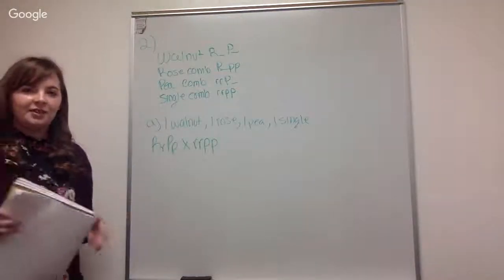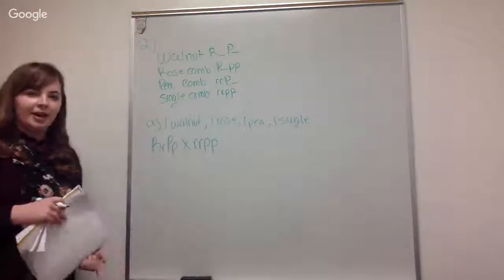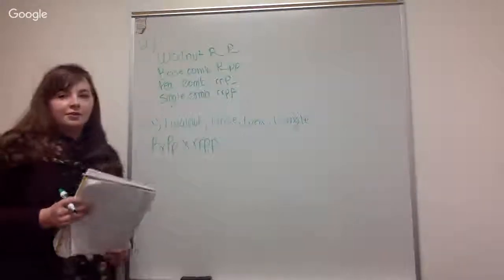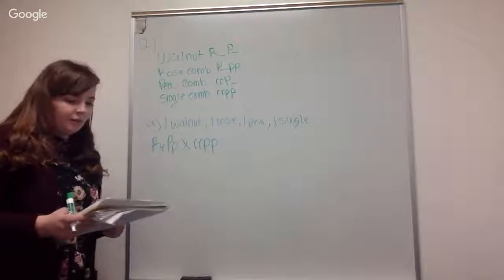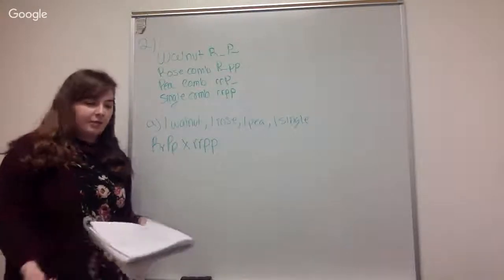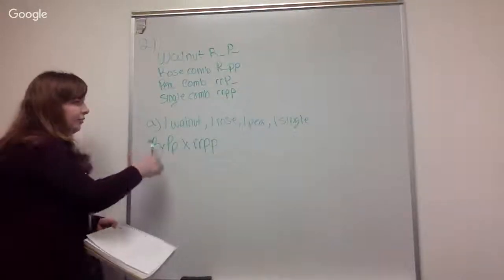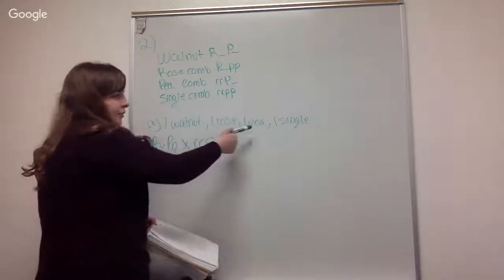Hey, my name is Christina Krass, and I'm going to be helping you with Problem 2, Part A and B. So on this problem, we're working for what are the genotypes of the parents that produce the following phenotype ratios. And in Part A, we're looking for one walnut to one rose to one pea to one single.